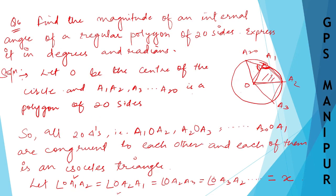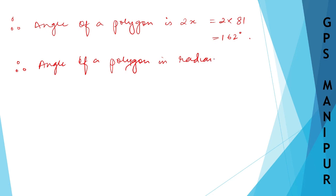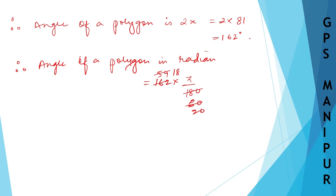Therefore the angle of the polygon is 2X = 2 × 81 = 162 degrees. Now to convert to radians: 162 × π/180. Simplifying by cancelling, we get 9π/10. So the answer is 9π/10 radians.